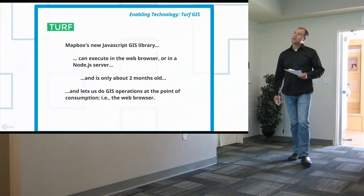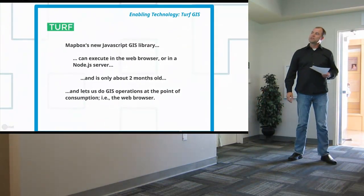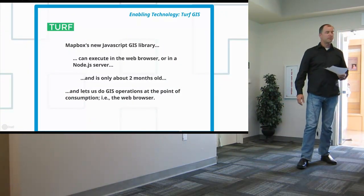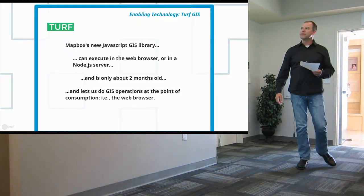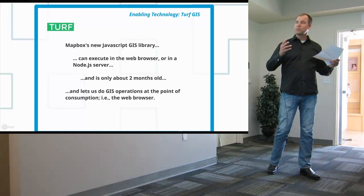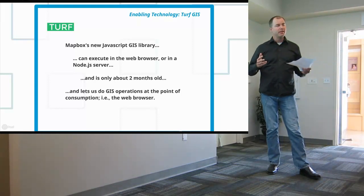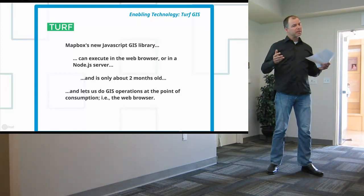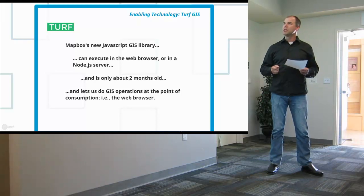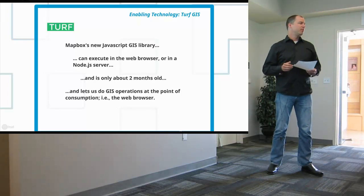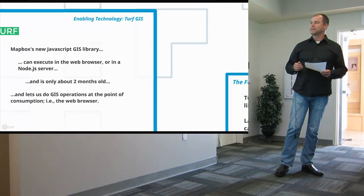The other new enabling technology is Turf. This is Mapbox's new JavaScript GIS library. It can execute in the web browser as well as on the server. It's only about two months old and only implements fairly basic GIS operations at the moment, but it lets us do them right at the point of consumption in the browser.